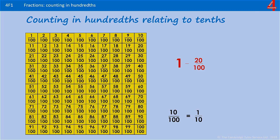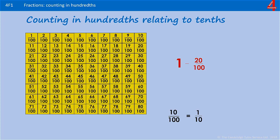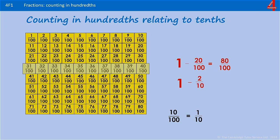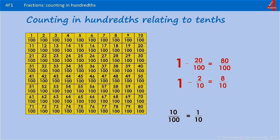If we have the whole thing and we take away twenty hundredths — that's two rows of ten hundredths — that leaves us with eighty hundredths. Pause the video to see if you can express those fractions as tenths instead of hundredths. Twenty hundredths is two rows of ten hundredths, so that's two tenths. And you're left with one, two, three, four, five, six, seven, eight — eight tenths, which is the same as eighty hundredths.